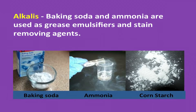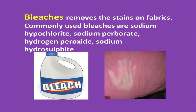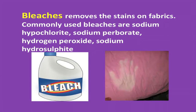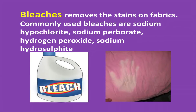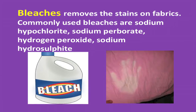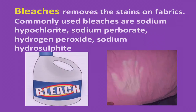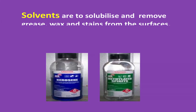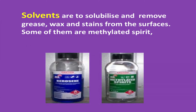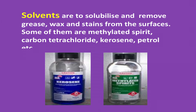Alkalis such as baking soda and ammonia are used as grease emulsifiers and stain removing agents. Bleaches such as sodium hypochlorite, sodium perborate, hydrogen peroxide, and sodium hydrosulfate are used to remove stains on fabrics.